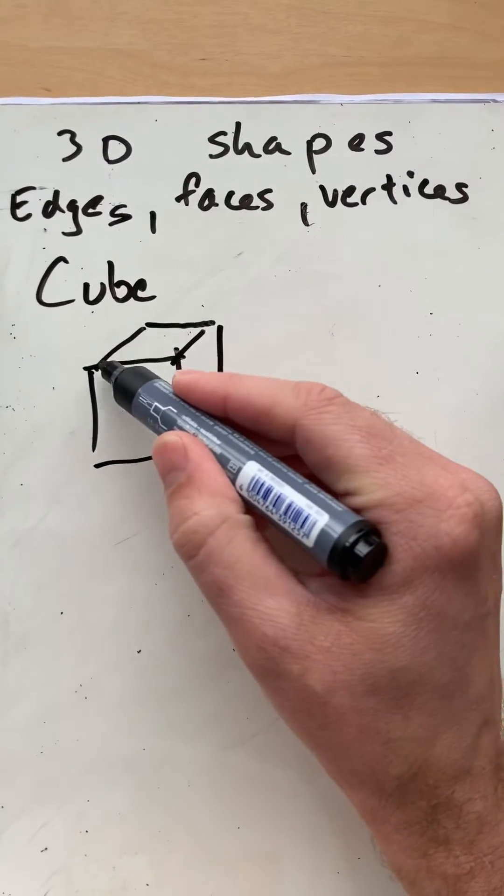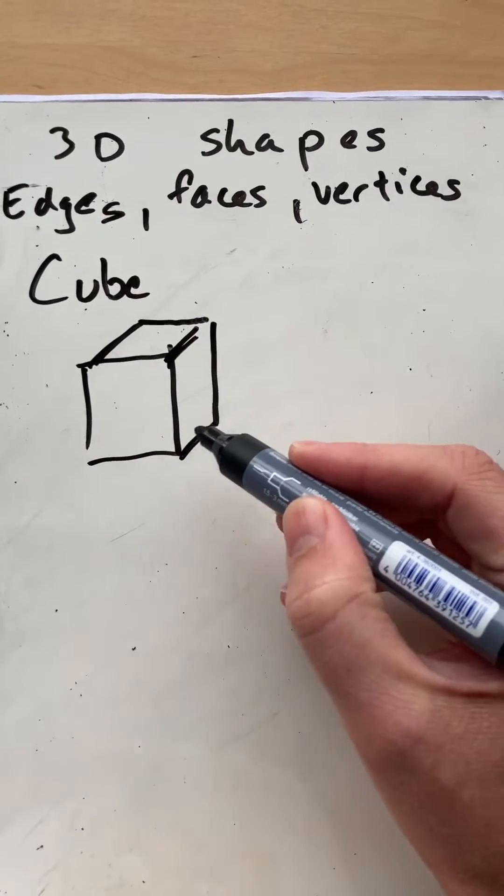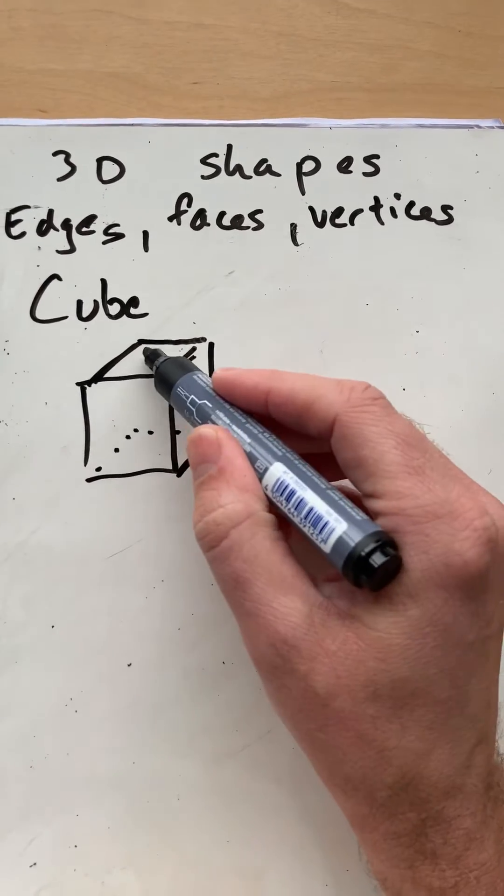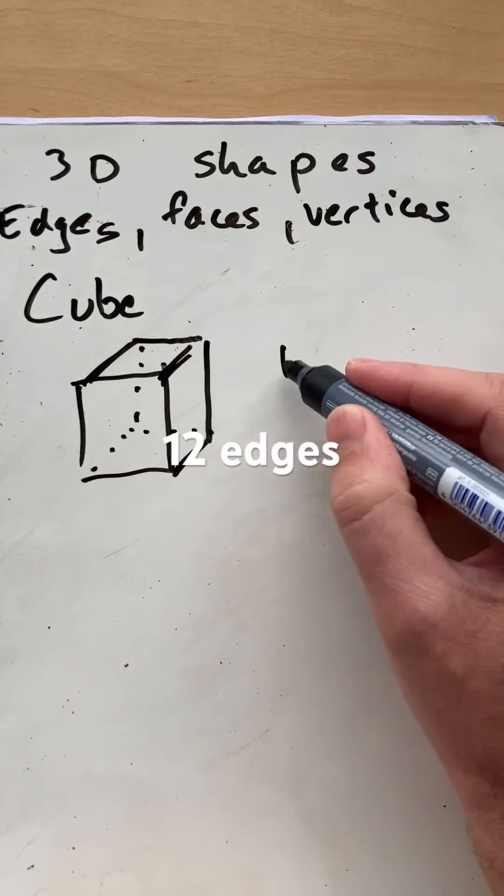So how many edges are there? There's 1, 2, 3, the hidden one 4, 5, 6, 7, 8, 9, 10, 11, and 12 edges.